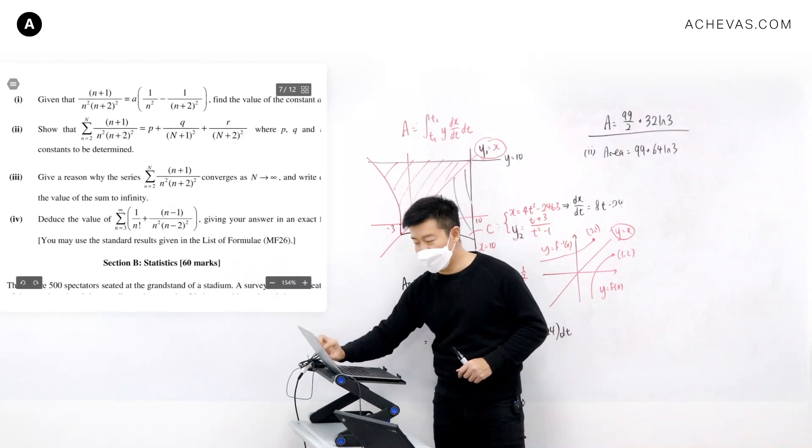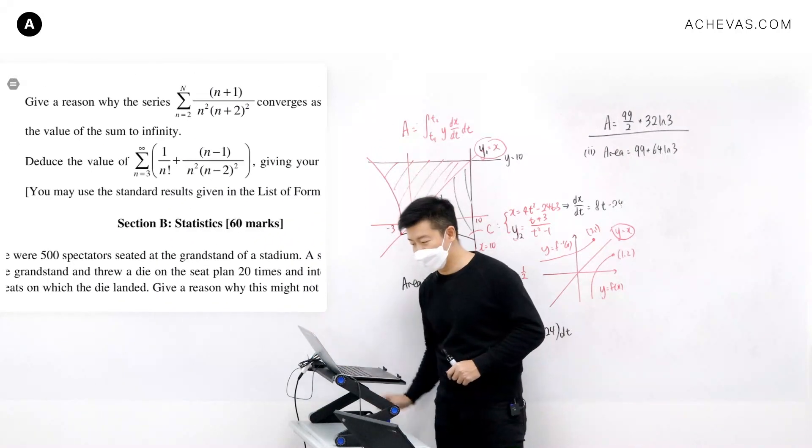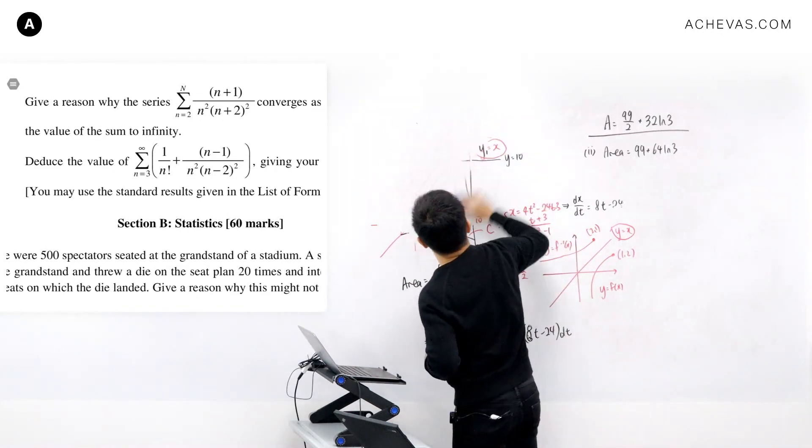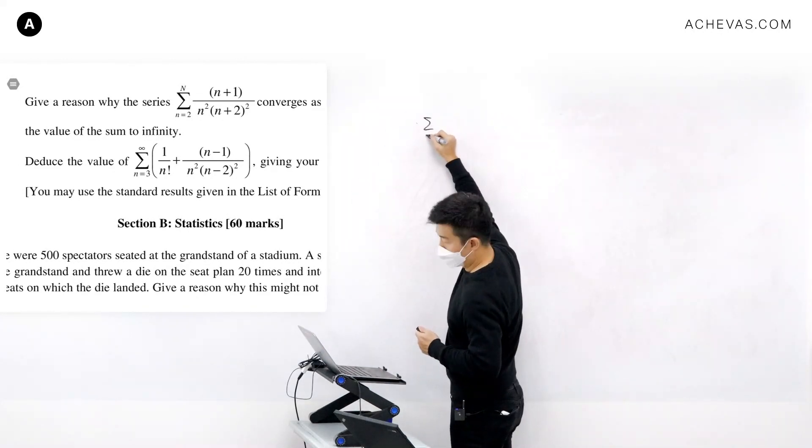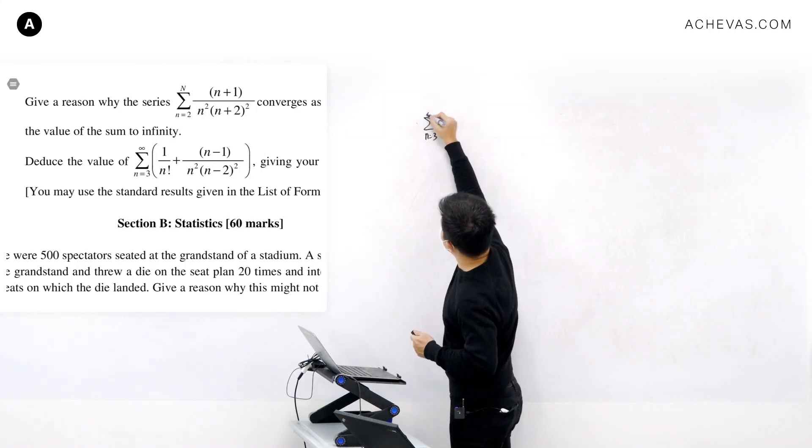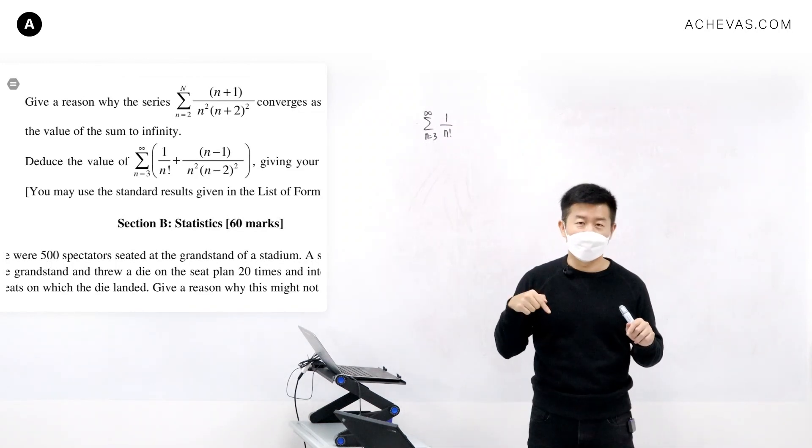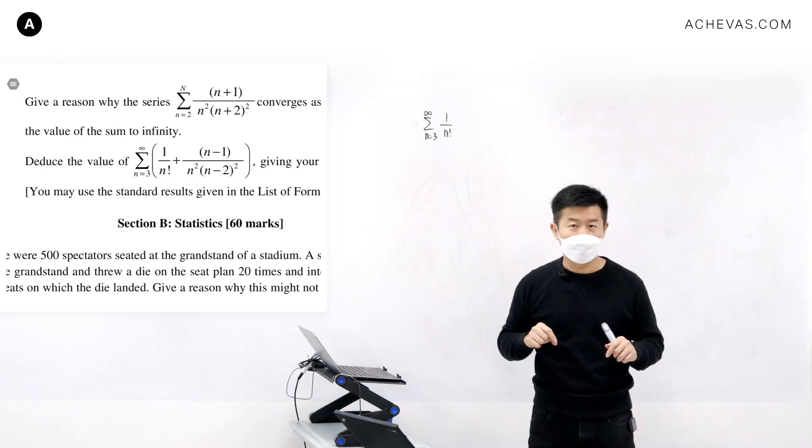Paper 2, question number 4, and specifically this: summation from n equals 3 all the way until infinity of 1 over n factorial. In the year 2017, this came out in the E-level. This is a 2014 VJC paper.